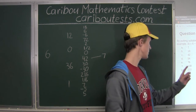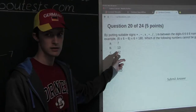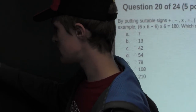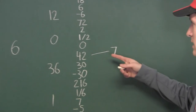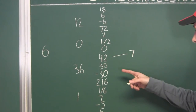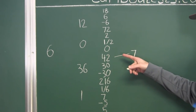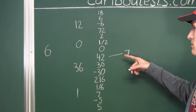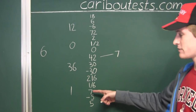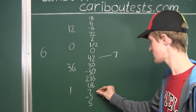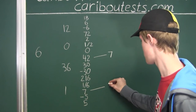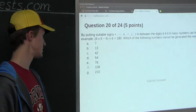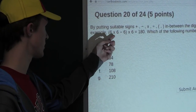Option B is 13. Looking at our list, 7 + 6 = 13. We already know we can generate 7, so 7 + 6 = 13 can also be generated. So both 7 and 13 can be generated from four sixes.